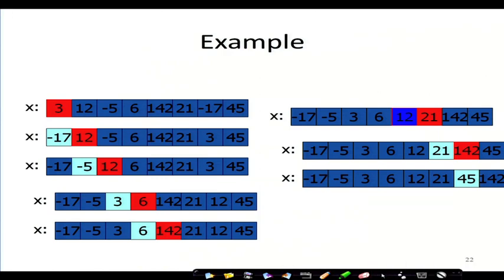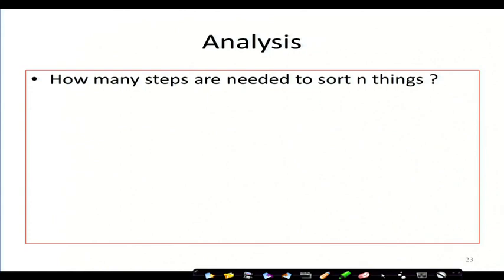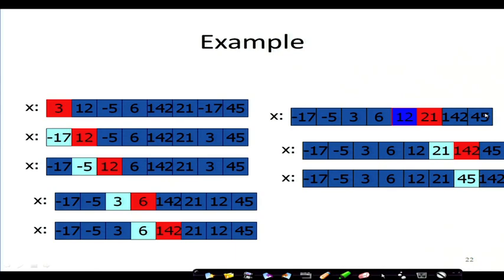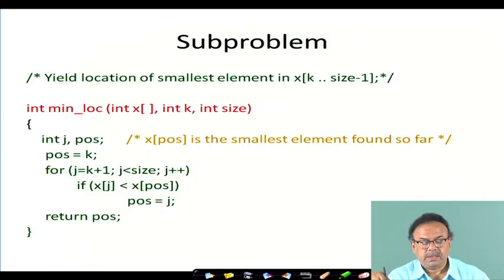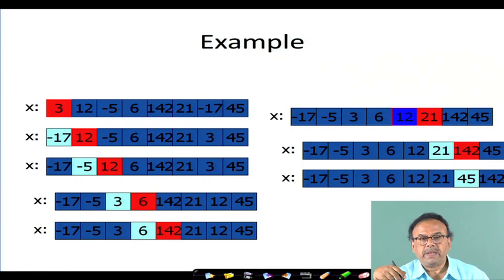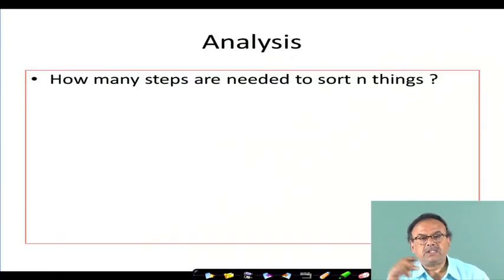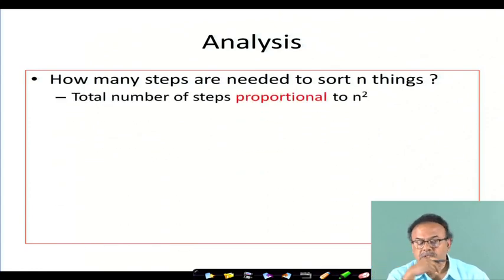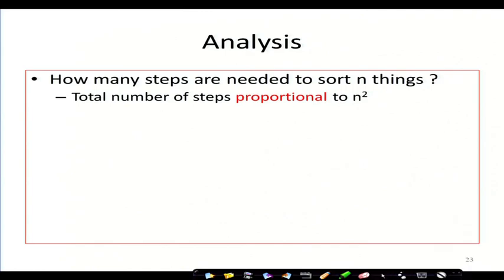The philosophy of selection sort is that we are selecting the minimum element among the unsorted elements and placing it in the proper position where that minimum element should be — that is why it is called selection sort. How many steps are needed to sort n things? If the list size is n, the total number of steps required is proportional to n squared.